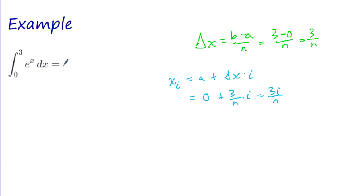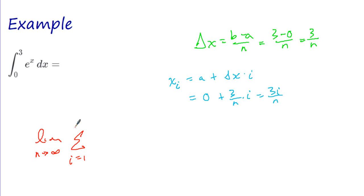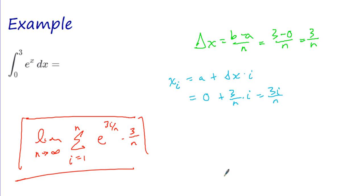Now we're ready to write the definition of this definite integral, which is the limit as n approaches infinity of the summation from i=1 to n of e^(xi) — meaning e^(3i/n) — times delta x (3/n). And that is the answer.